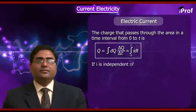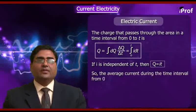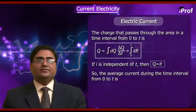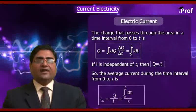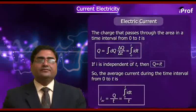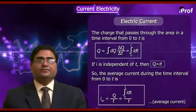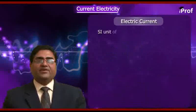If I is independent of T, then Q equals the integration of I DT from 0 to T, divided by T. This is a concept used to calculate average current.